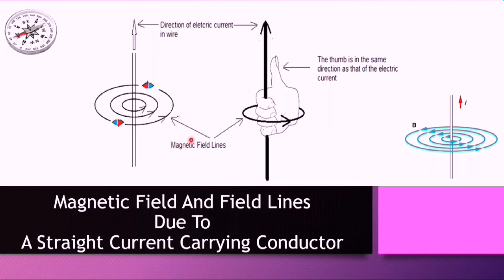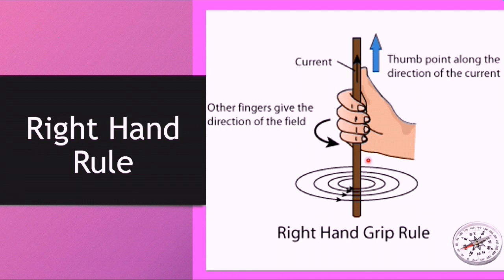The statement that magnetic field lines emerge from north poles and go into south poles is just a convention. There are rules for remembering the direction of the magnetic field produced by a current. The circular field around a current-carrying wire does not have magnetic poles, so to find the direction of the magnetic field we use the right-hand rule. It states that if we grip the wire with our right hand, pointing our thumb in the direction of the current, our curled fingers point in the direction of the magnetic field — the lines of flux.